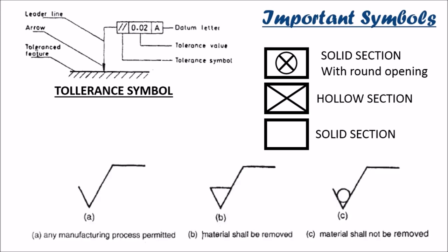Coming up to the manufacturing processes symbols. Simple under root represents that any of the manufacturing processes permitted, either you can add the object or you can remove the object. Under root signature with a V sign closed means material shall be removed from it. And under root signature with a circle over it means material should not be removed.